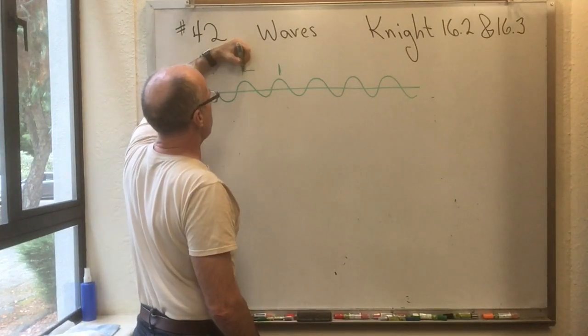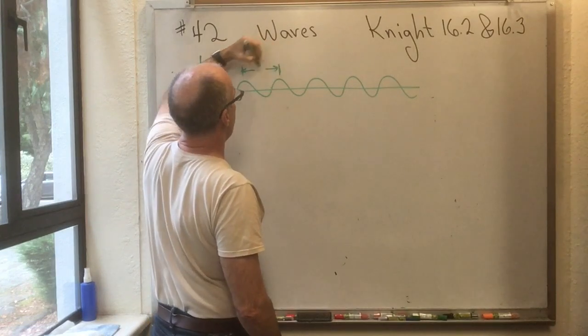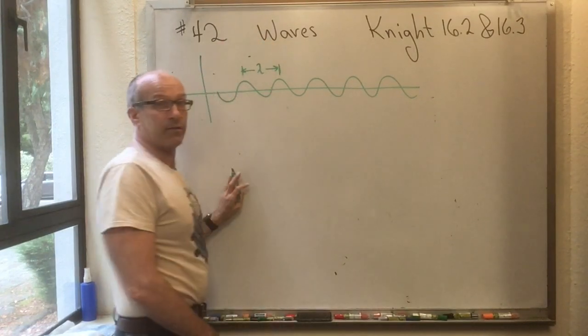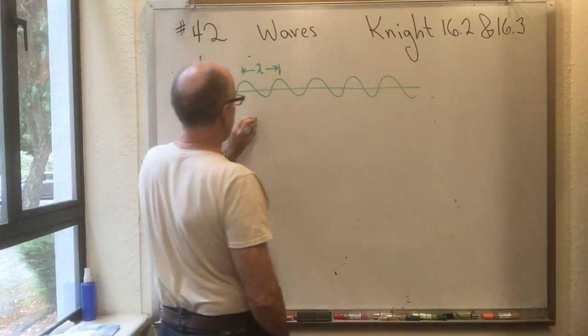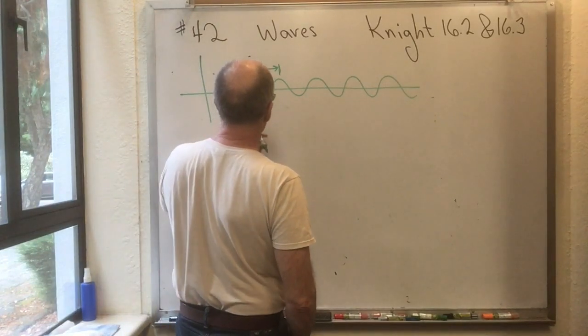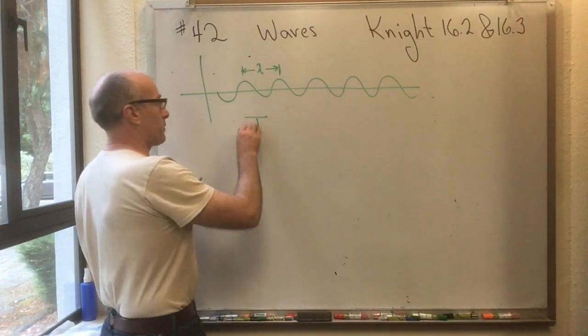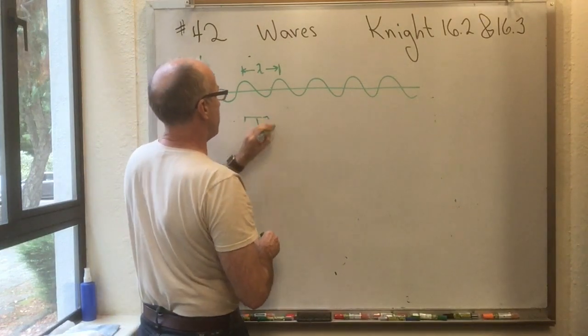So waves that repeat have a few properties. First of all, we call the distance between crests lambda, the wavelength. We still call the time between crests, we reuse that from the last chapter, we call that capital T, the period.